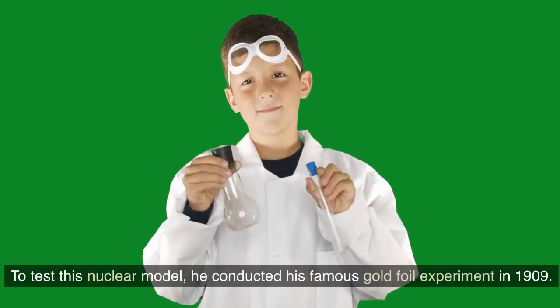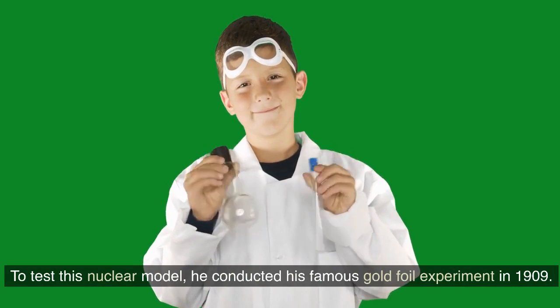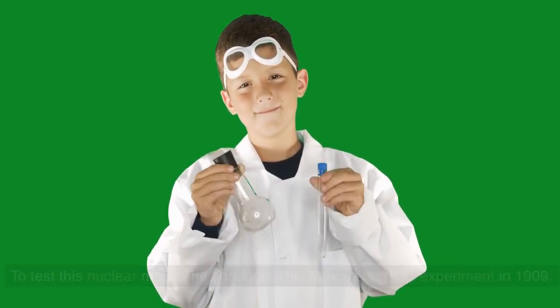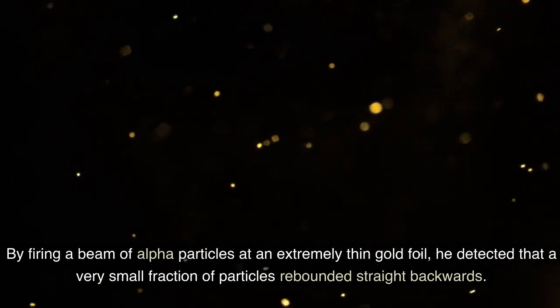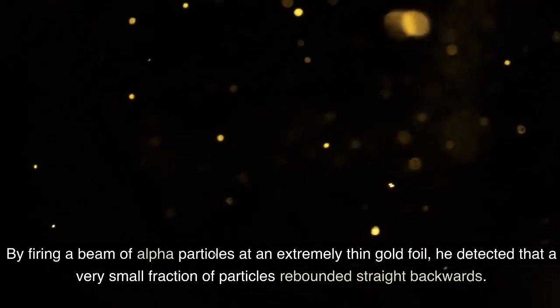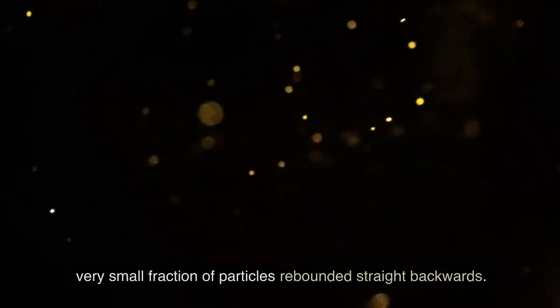To test this nuclear model, he conducted his famous gold foil experiment in 1909. By firing a beam of alpha particles at an extremely thin gold foil, he detected that a very small fraction of particles rebounded straight backwards.